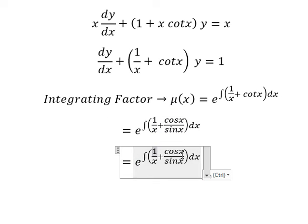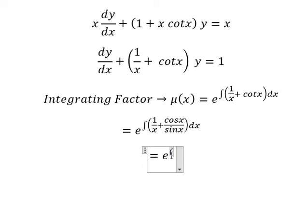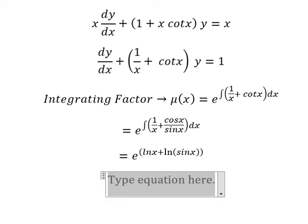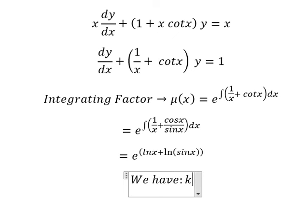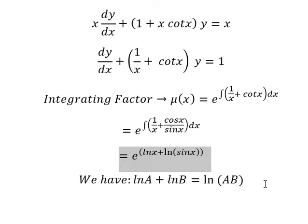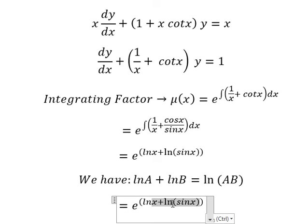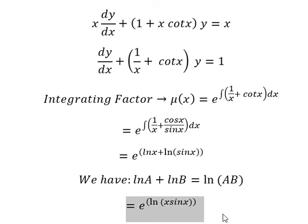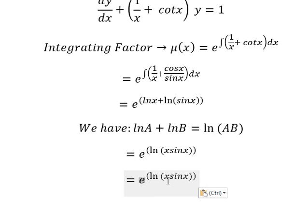The integration of one over x we have ln x. The integration of cosine x over sine x, that is ln of sine x. Next we have the formula: ln a plus ln b equals ln of a times b. So for this one we combine and we have ln of x sine x. This simplifies to x sine x.